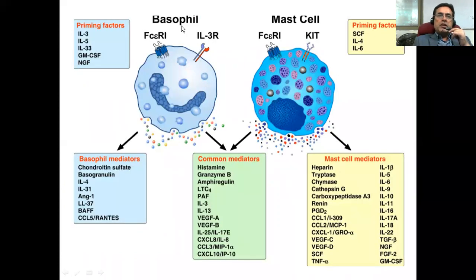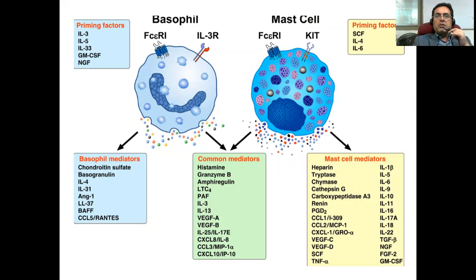In this slide, you can see a basophil and mast cells. A basophil originates and also matures in the bone marrow, but not the mast cell. It has to migrate to the tissues via blood, where it would mature with the help of stem cell factor, which binds to this particular receptor KIT.